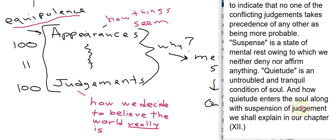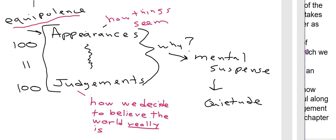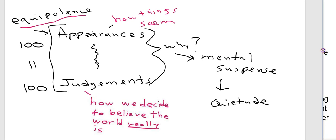And how quietude enters the soul along with suspension of judgment, well he's going to cover that later. Okay so what's the goal then for Sextus? He wants us to be contrasting and comparing appearances with judgments, certain judgments with other judgments. We end up with a state of equipolence. And then in the end this leads us to mental suspense, which basically just means we don't make any more judgments.